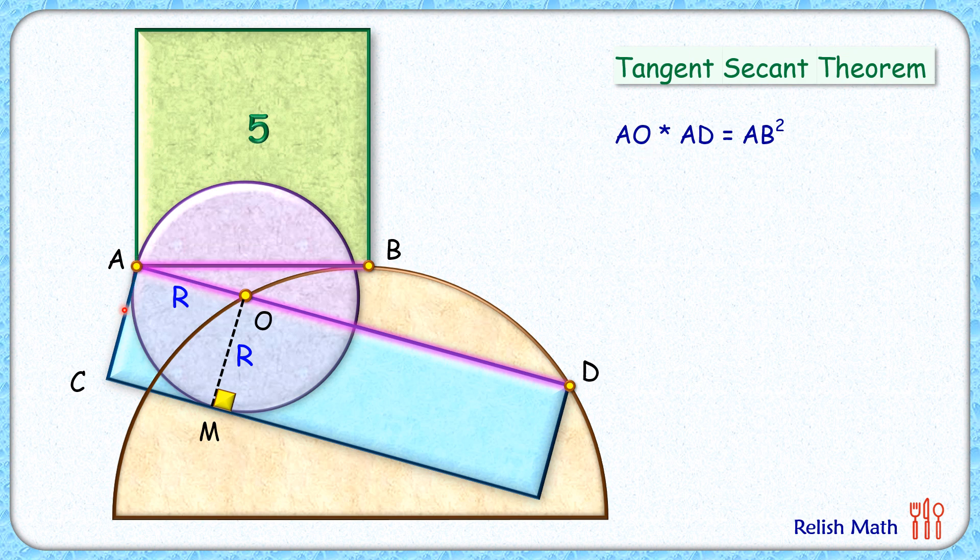So we can say that AO length is same as AC length. So here we get AC times AD is AB square.